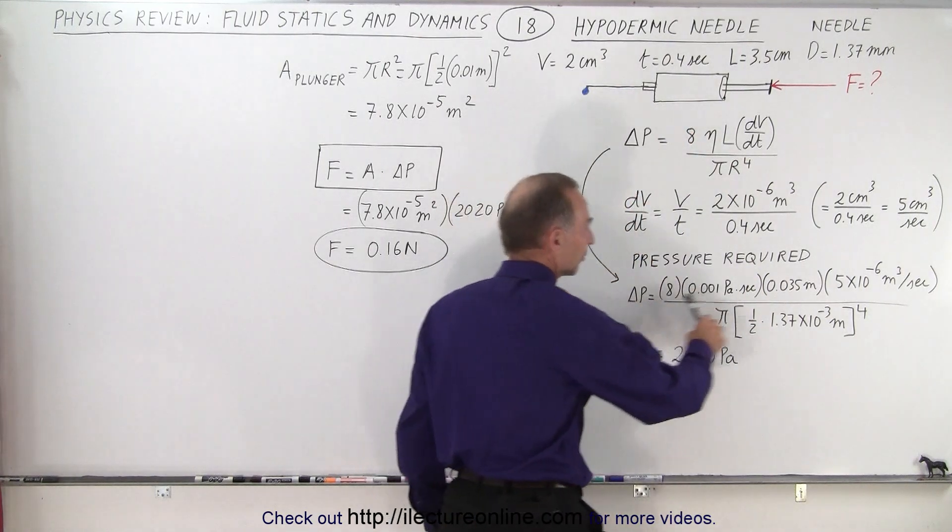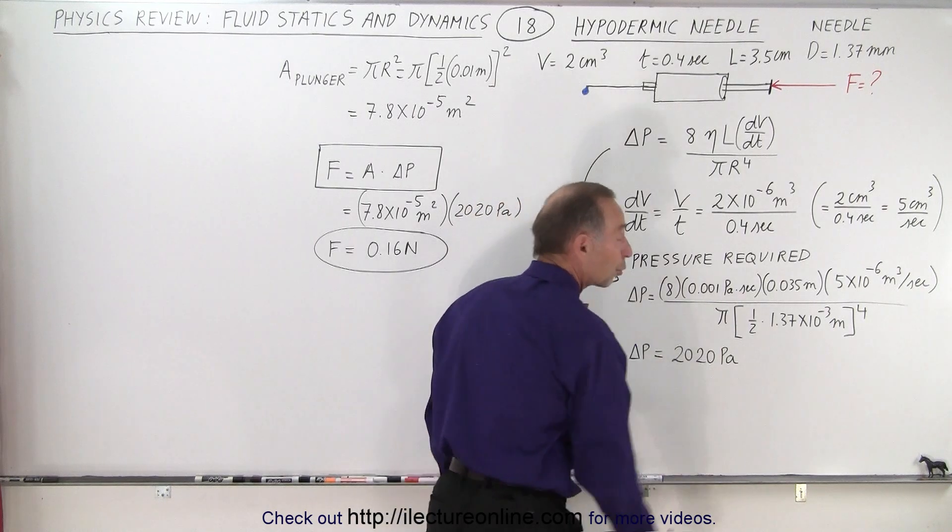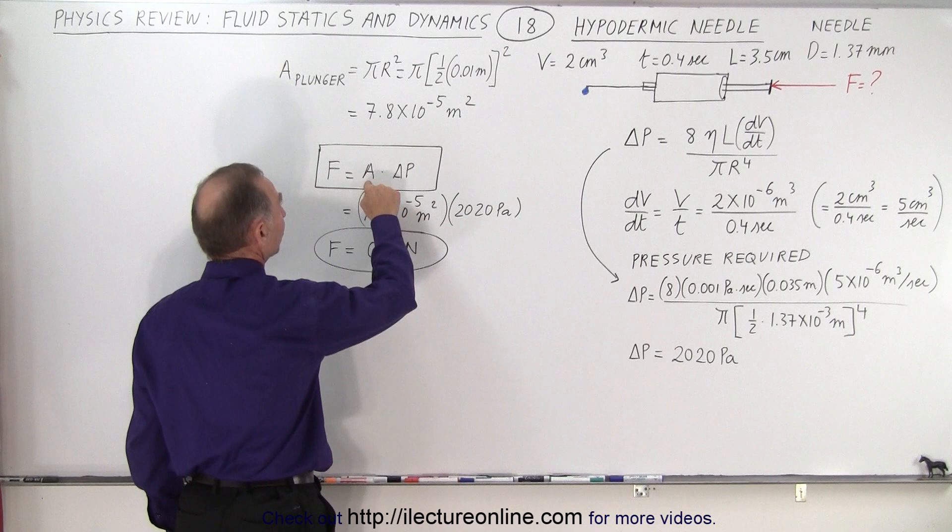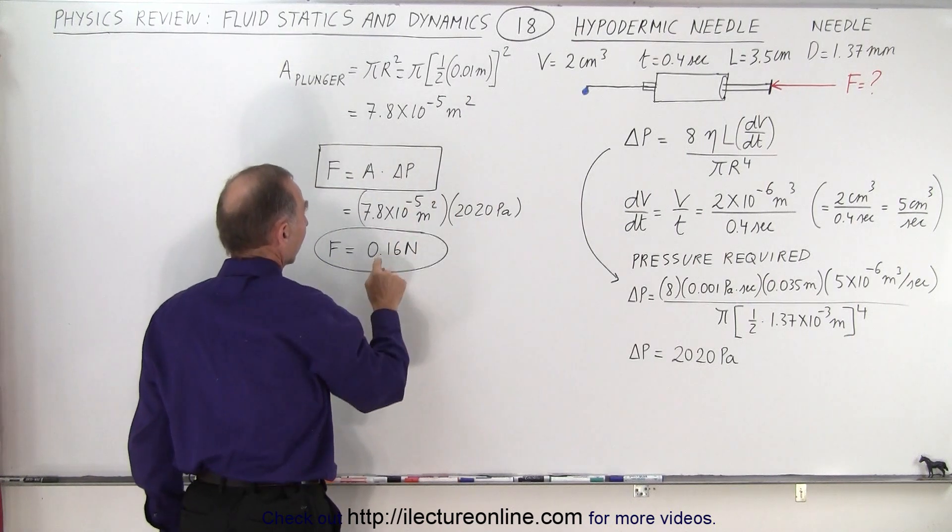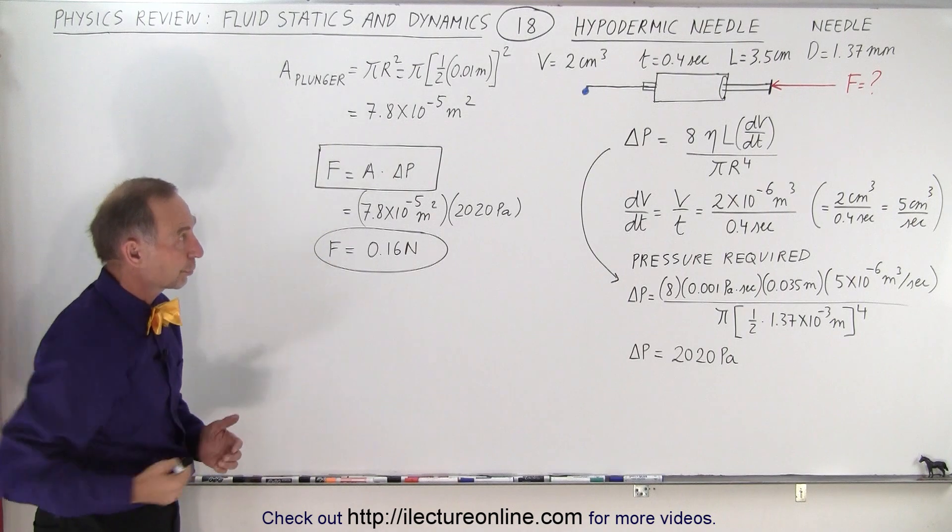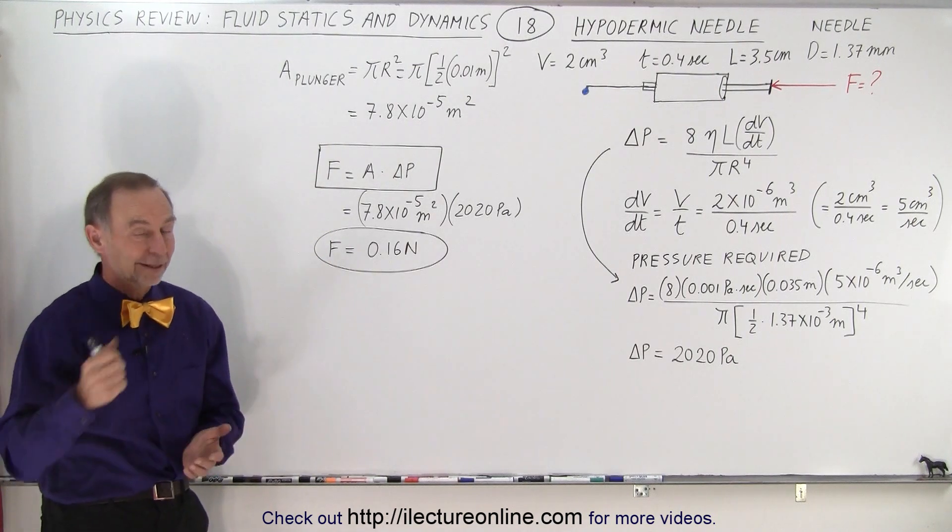When you plug in the proper values you get a difference in the pressure of 2,020 Pa. That goes in here times the cross-sectional area of the plunger and we have the force required to push the fluid through the needle. And that is how it's done.